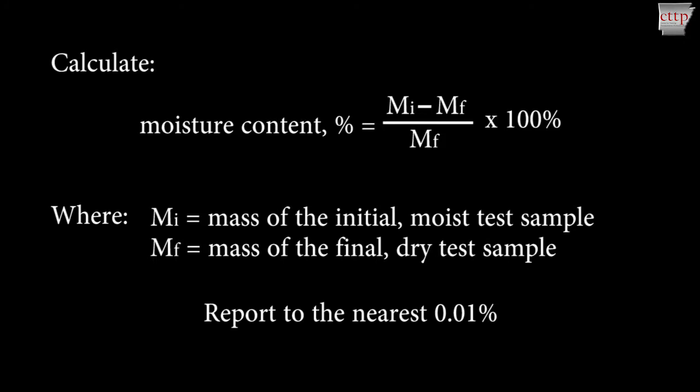Calculate the moisture content by dividing the difference in the initial and final sample masses by the final sample mass. Report the moisture content as a percent of the dry mass to the nearest 0.01 percent.